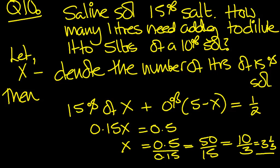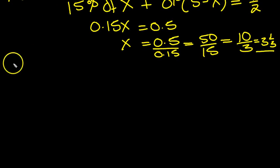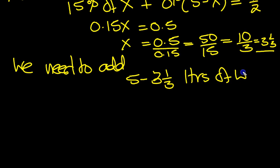So, how many litres do you need adding to it to get to 5 litres of 10% solution? Well, we need to add, it would be 5 minus 3 and 1 third litres of water.